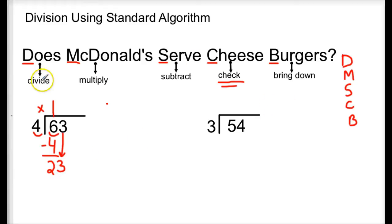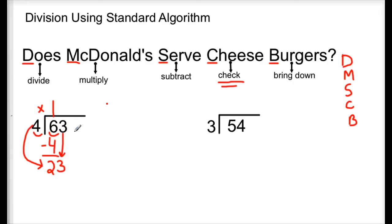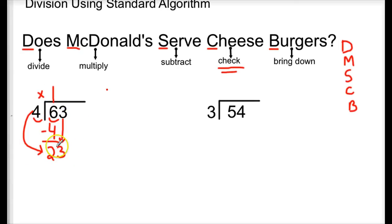And I start over, back to dividing. This time I need to go this way. This is another part that can be a little confusing because you would think that we need to go to the 3 in the dividend, but we do not. We only need to get started by starting with the 6, that part of our dividend. Now we have a new dividend. This 23 here is now our new dividend. So now it's 23 divided by 4.